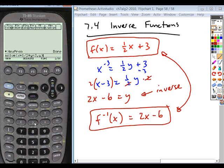And then solve, in this case, for y. It'll give you your answer to confirm 2x minus 6 is that inverse. But you do have to do that step manually.